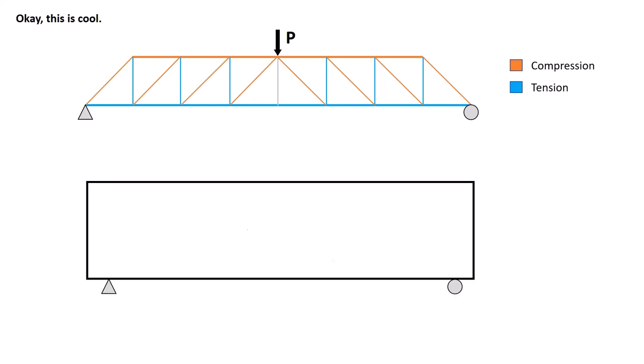Now take a simply supported reinforced concrete beam and apply a load P as we did for the truss. This beam is subjected to bending and shear. Because of bending, the bottom portion of the beam is in tension so it cracks, and the top portion of the beam is under compression.